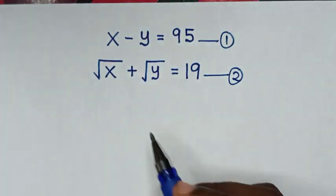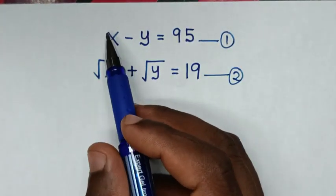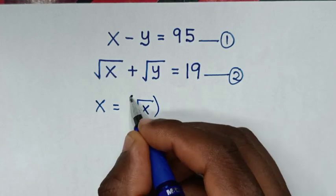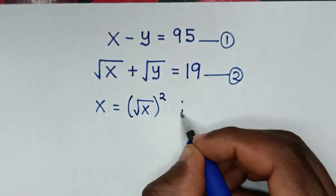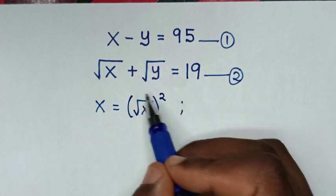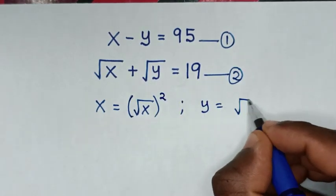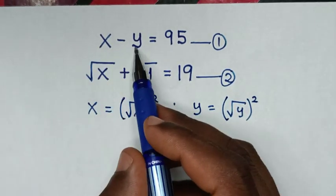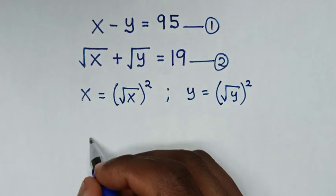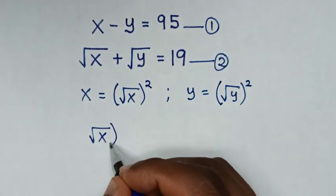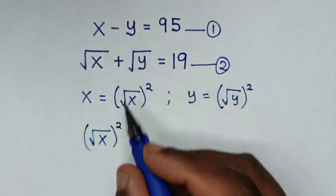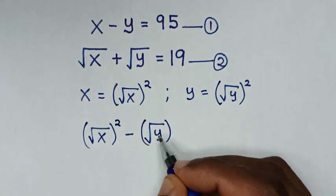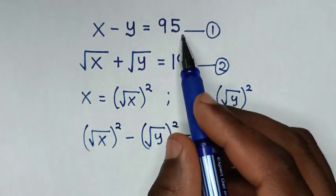From equation 1, we express x in terms of square root of x: x is equal to square root of x, bracket squared. Also, y in terms of square root of y: y is equal to square root of y, bracket squared. Then substituting into x minus y, it becomes square root of x bracket squared minus square root of y bracket squared, which is equal to 95.